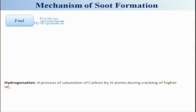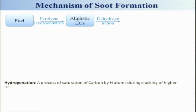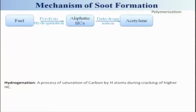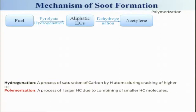Both pyrolysis and hydrogenation will be going on in parallel, and you may get some aliphatic hydrocarbons as a result. Dehydrogenation means removing the hydrogen atom from these aliphatic compounds and making way for double bonds or an acetylene-type structure. Acetylene is generally considered to be the main initiator of soot formation. Acetylene will also be polymerized — polymerization being the process of forming larger hydrocarbons by combining smaller molecules — and due to this polymerization, you may get polyacetylene-type features.